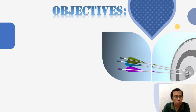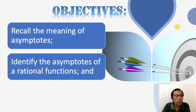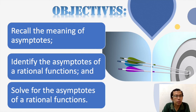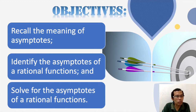Before we proceed, let's have first our objectives. Number one, recall the meaning of asymptotes. B, identify the asymptotes of a rational function. And solve for the asymptote of a rational function.